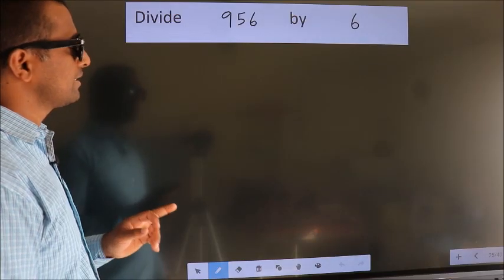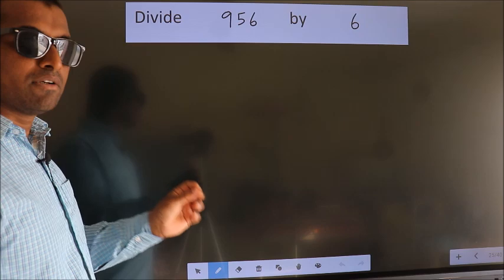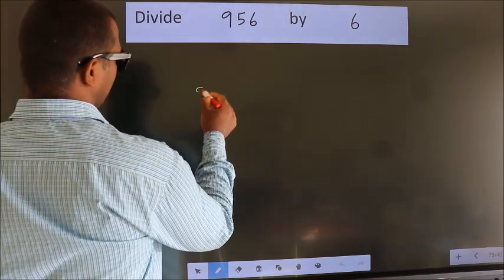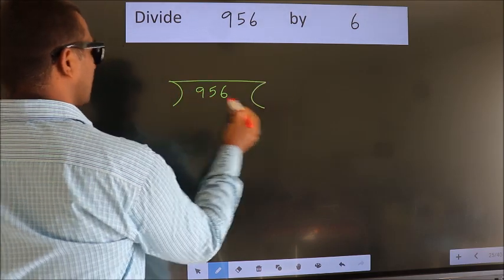Divide 956 by 6. To do this division, we should frame it in this way: 956 here, 6 here.